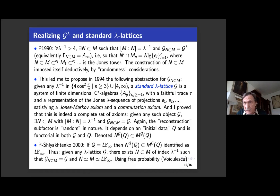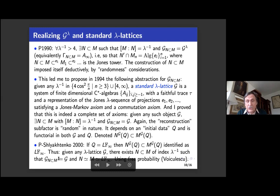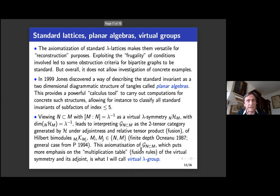I denote the reconstruction N^G(Q) ⊂ M^G(Q) — it is functorial in both G and Q. With Dima, a few years later, we proved that if Q = L(F∞), then these factors are isomorphic to L(F∞) again. Thus, given any λ-lattice G, there exists N ⊂ M of index λ⁻¹ with standard lattice G where both N and M are isomorphic to the free group factor L(F∞). This uses free probability theory and Voiculescu's random matrix model.